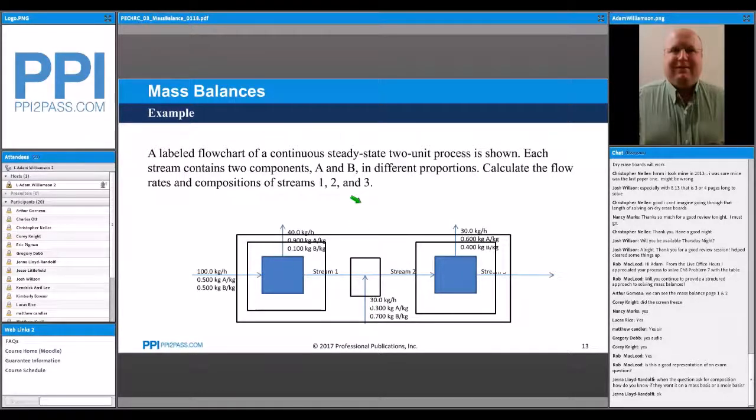If we look instead at unit op two, what do we have? We have two unknowns in stream two, two unknowns in stream three, for a total of four unknowns, and we still only have two equations. So in this case we have two more unknowns than we have equations, so that's an under-specified case. We're not actually going to be able to do that mass balance right away.